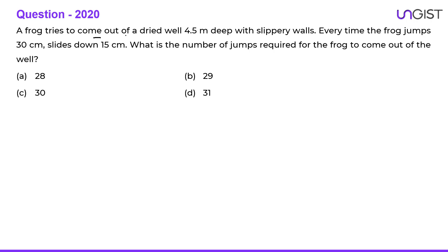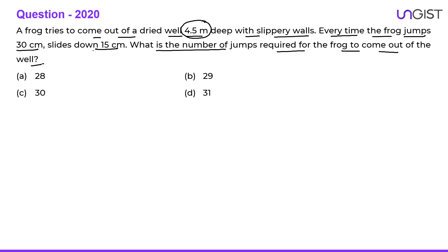Next question: A frog tries to come out of a dried well 4.5 metres deep with slippery walls. Every time the frog jumps 30 centimetres but slides down 15 centimetres. What is the number of jumps required for the frog to come out of the well? First, convert 4.5 metres into centimetres: 4.5 m = 450 cm.